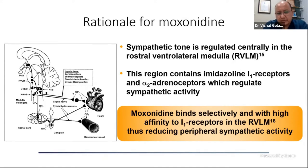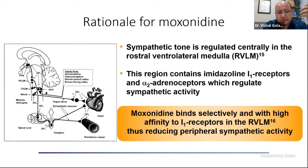This brings us to the rationale for moxonidine. The sympathetic tone is controlled by central pathways from the brainstem, especially the rostral ventrolateral medulla, which contains imidazoline I1 receptors and alpha-2 adrenal receptors. Moxonidine, as well as clonidine, belong to this drug group — they cross the blood-brain barrier and act on these receptors. Some drugs bind alpha-2 receptors more; some bind imidazoline receptors more. The various effects and side effects are a result of the differential binding to these receptors.